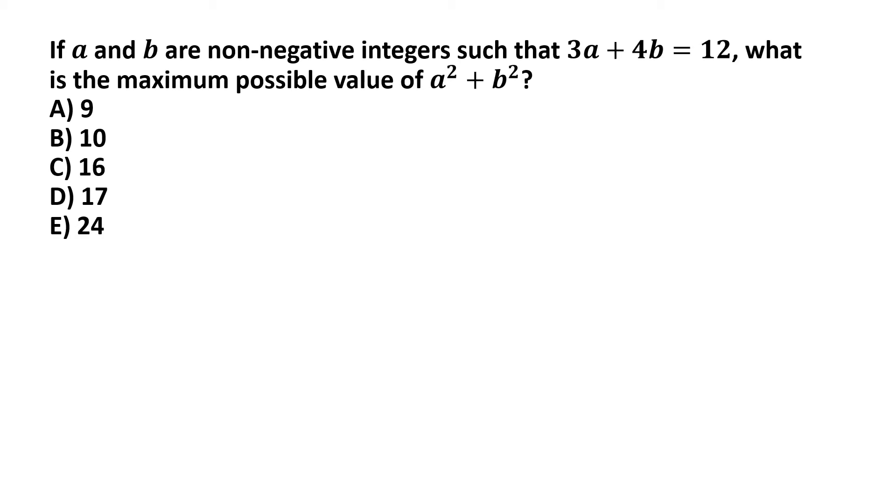Now, we are given this constraint 3a plus 4b is equal to 12. But then, there is another constraint which applies to a and b, which is that these are non-negative integers. And non-negative integers means that a and b can take integer values starting from 0 or greater than 0.